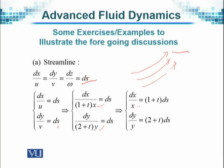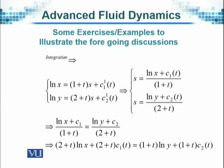And we can write it as, we leave x here, and we cross multiply with 1 plus t into ds. And therefore, this will be dy/y into 2 plus t into ds. So this is just cross multiplication of this factor.